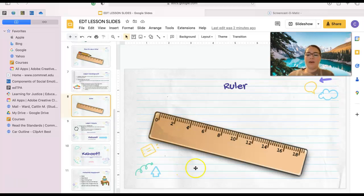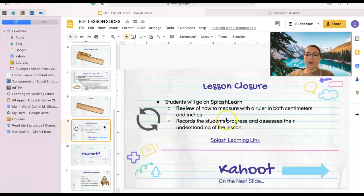Now that we have evaluated our peers' rulers and looked at them and checked whether they are accurate or not, we are going to go into our lesson enclosure which will further our knowledge a little bit more. First, we are going to log on to Splash Learn, which you guys have all used before, and we know it is a learning game.